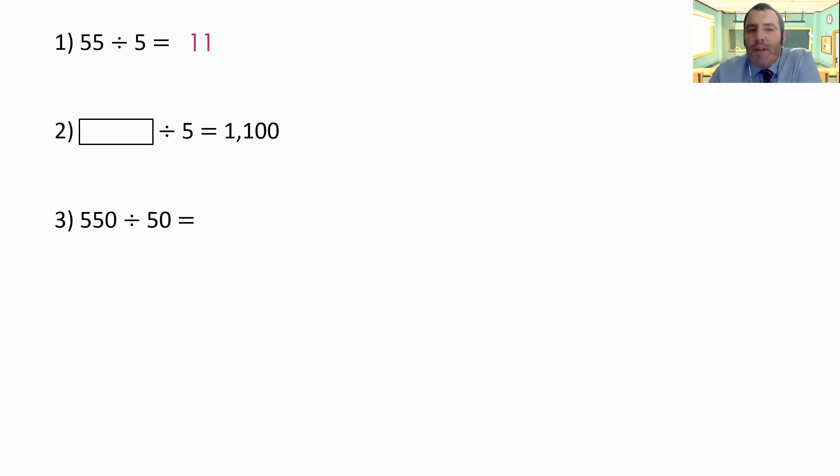Now we can use that little bit of knowledge to work out the other two answers. We think about what's the same and what's different. We don't know what the first number in question 2 is, but we do know that we're dividing by 5 and the answer is 1100. If we use what we already know that 55 divided by 5 is 11.